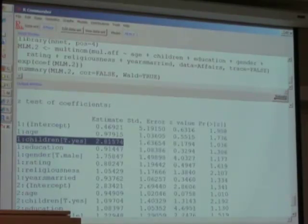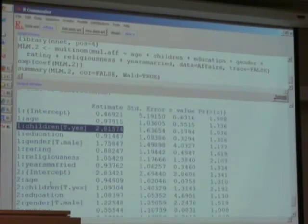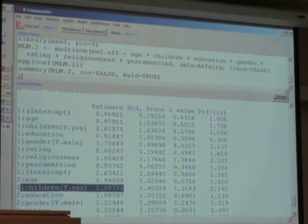Individuals with children are 2.8 times more likely to have an affair than those who do not have children, all else being equal. However, the same variable suggests that there is very little impact on having 2 or more affairs with the number of children.